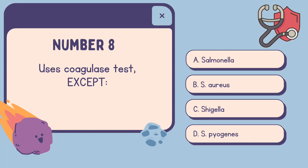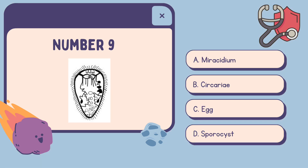Number eight: Uses coagulase test except — A. Salmonella. B. S. aureus. C. Shigella. D. S. pyogenes. The correct answer is D. S. pyogenes.